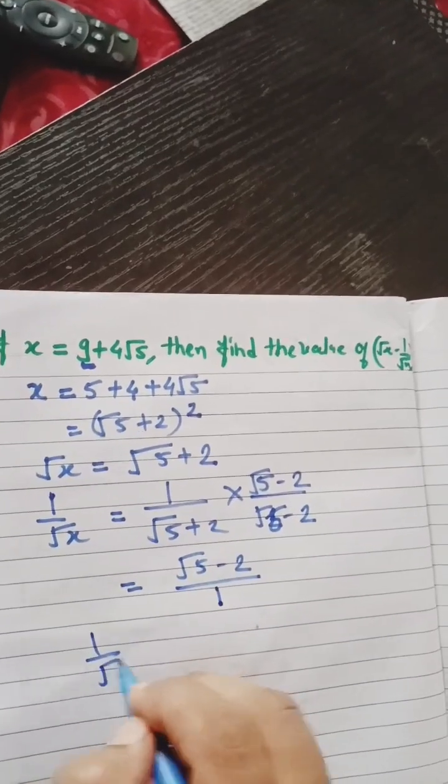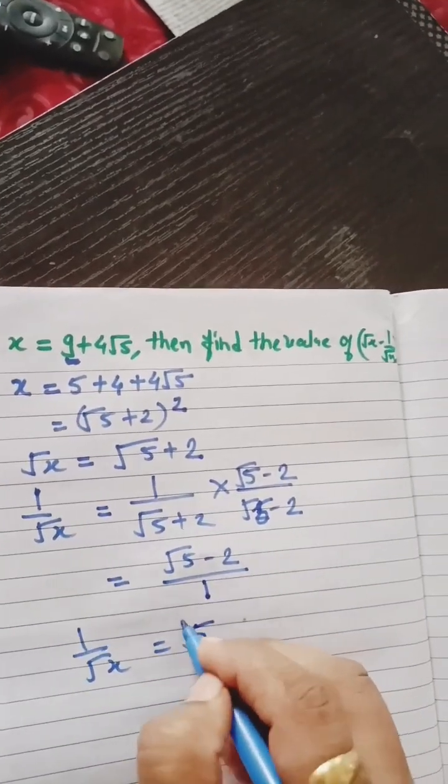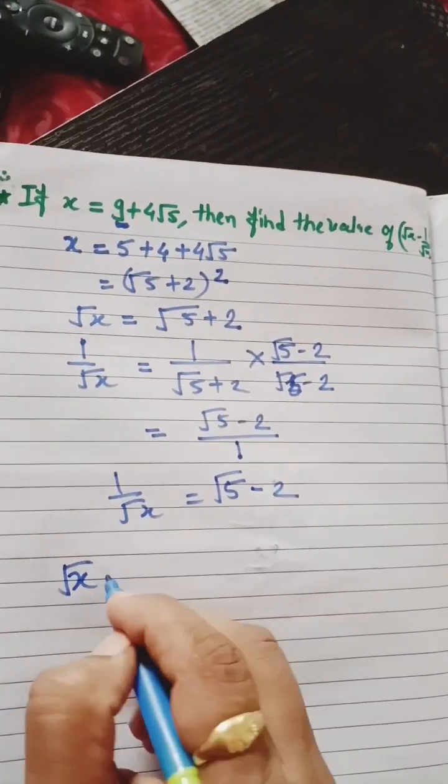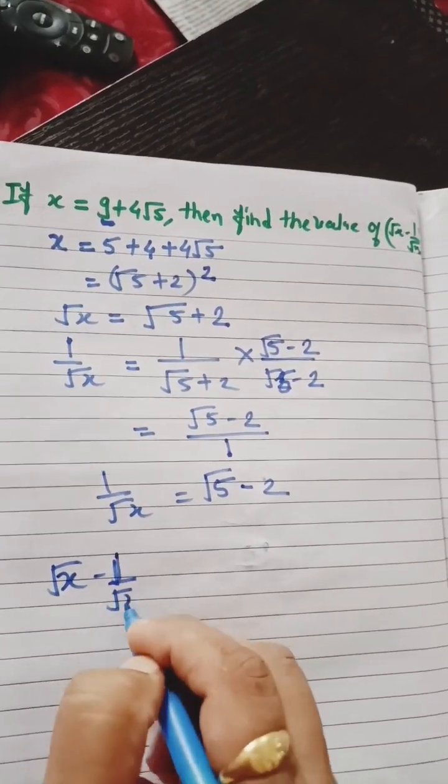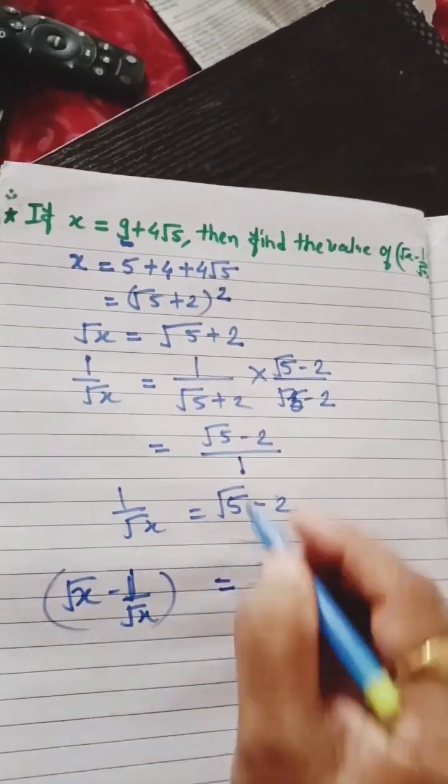So, 1 by root x is root 5 minus 2. Now for root x minus 1 by root x, our root x is this one.